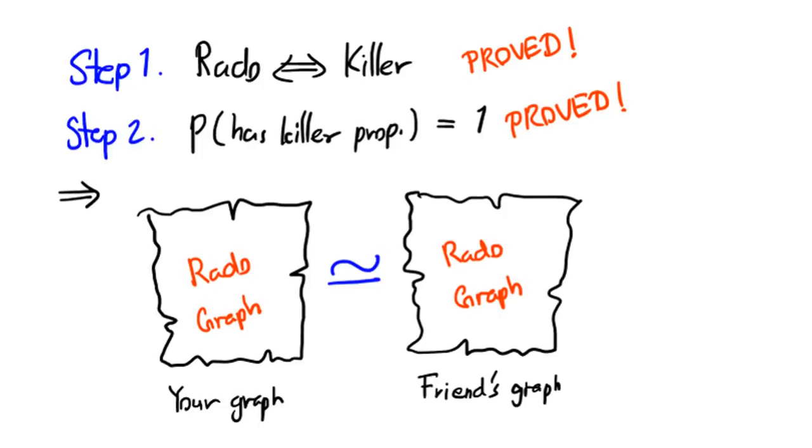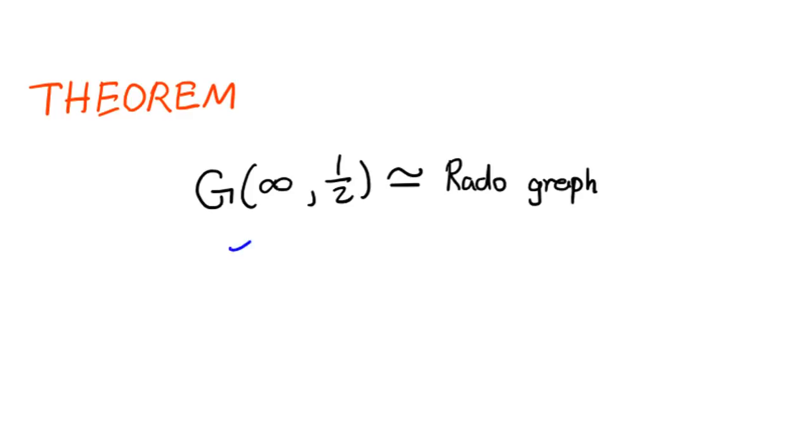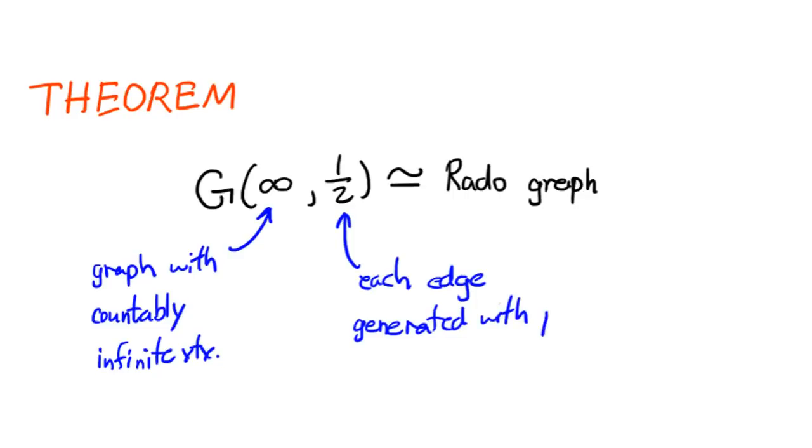Well, that was quite a journey, wasn't it? But all it took was the Rado graph and its game-breaking killer property. Actually, the problem mentioned in this video is just rephrasing of some theorem that is quote-unquote well-known in the field of infinite graphs. If you generate each edge of a countably infinite graph with probability 1 over 2, then there is probability 1 that this graph will be isomorphic to the Rado graph, which is what we proved in the two steps.